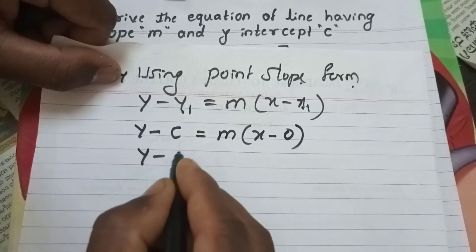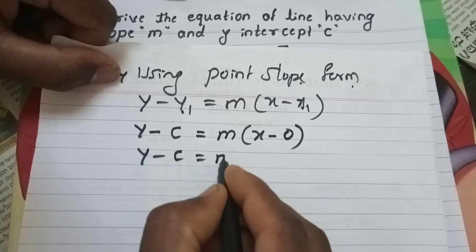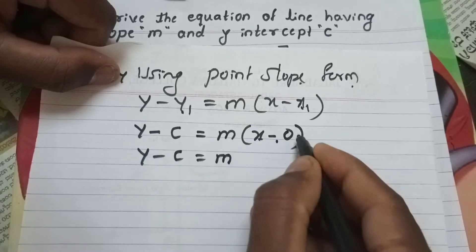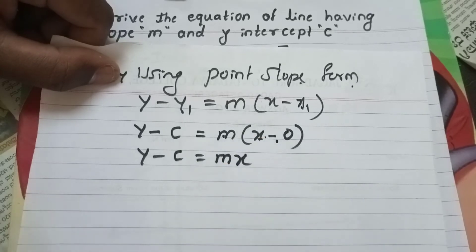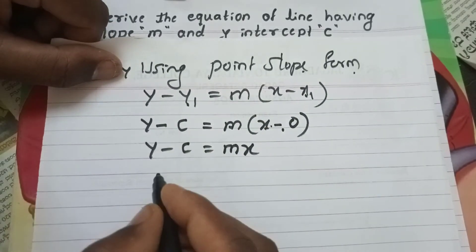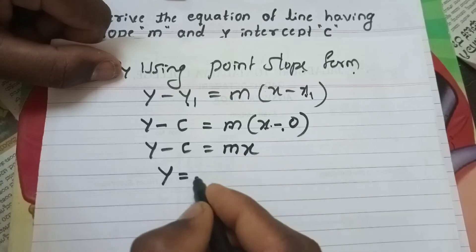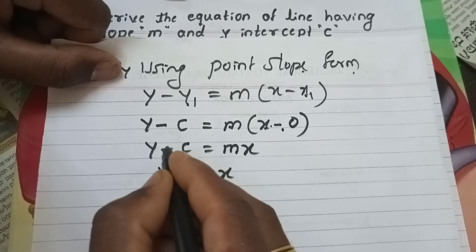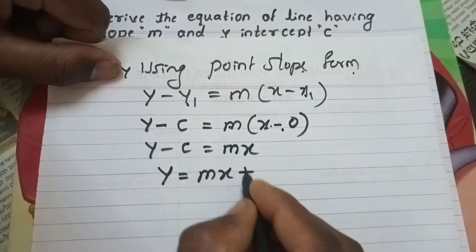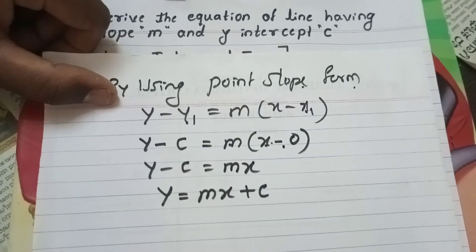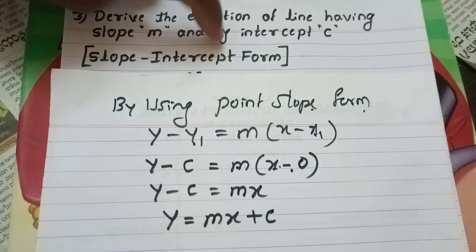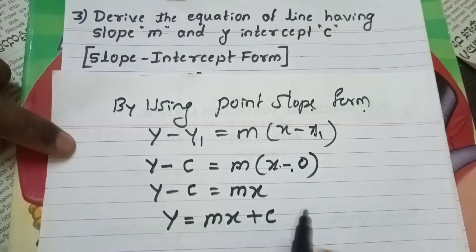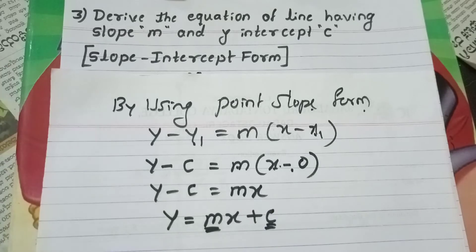So this gives y minus c is equal to m into (x minus 0), which is mx. Then finally y is equal to mx plus c. This is the slope-intercept form, where m is the slope of the line and c is the y-intercept.